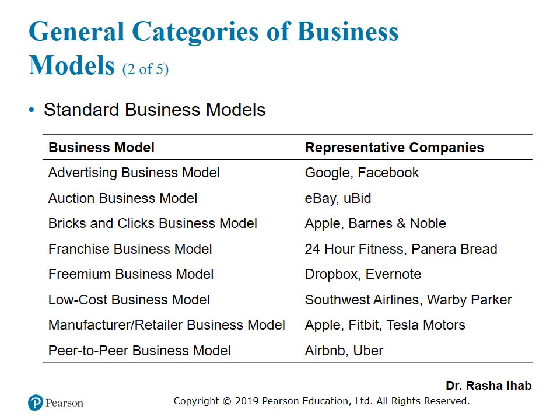Another example of the standard business model is the auction business model. The idea is to provide a platform for individuals or businesses to sell products in an auction format. For example, eBay, where businesses sell whatever products they want on a platform so that users can find the products they want on that platform.